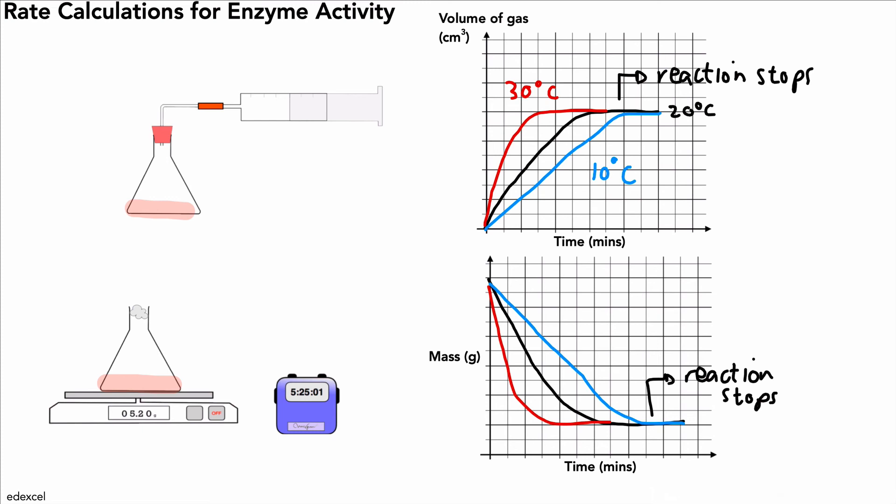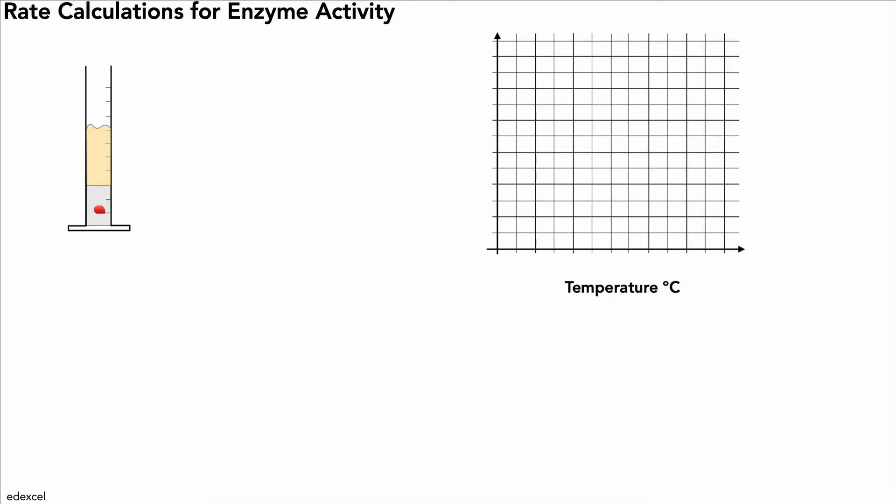We could take a look at our final example with the hydrogen peroxide. So here we have some liver tissue or other type of tissue that we might have in a solution of hydrogen peroxide. And we could measure, for example, the time taken for the froth to reach five centimeters. So let's just put that label on our graph to see what it would look like. We've got temperature along the bottom, and there we go, time taken on the y-axis.